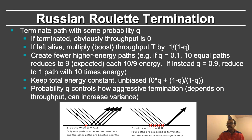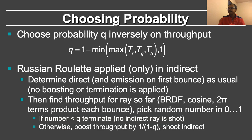Here is one example: you have 5 paths with q equal to 0.2. You can make it 1 path — 4 paths are expected to terminate and the survivor is boosted. Conversely, with q equal to 0.9, 4 paths are expected to continue and only 1 path is expected to terminate. In the assignment, you are requested to choose this probability using the formula shown: you consider the max of the throughput in all the color channels, and set q equal to 1 minus the min of this value, comma 1.